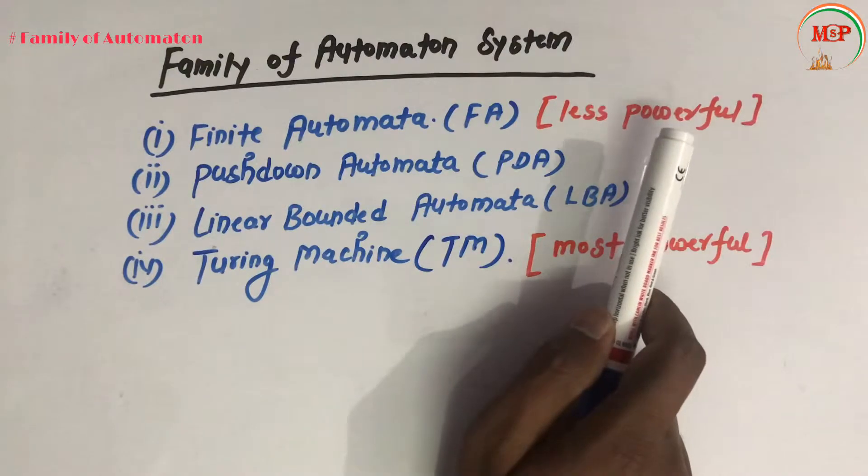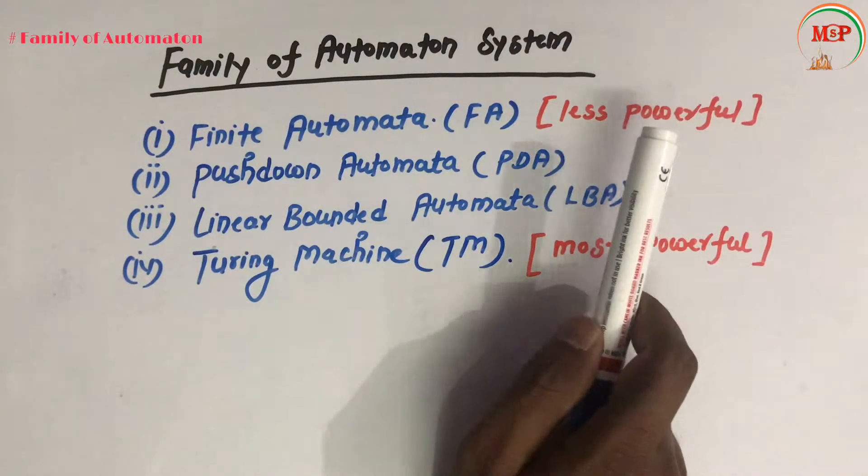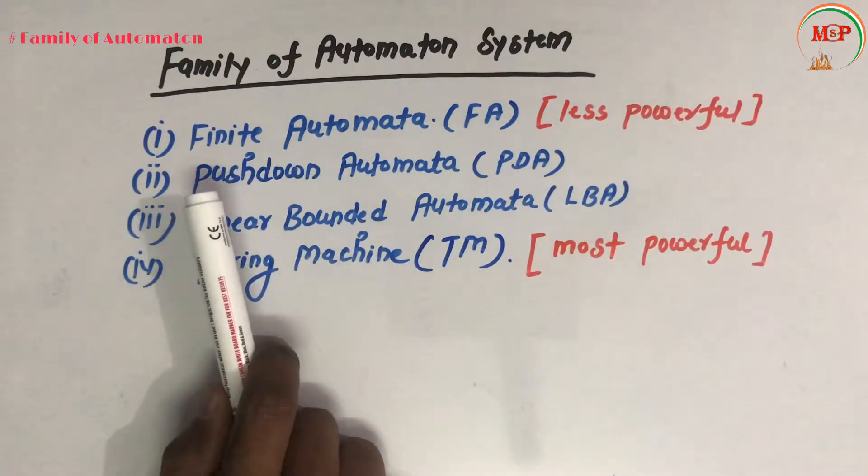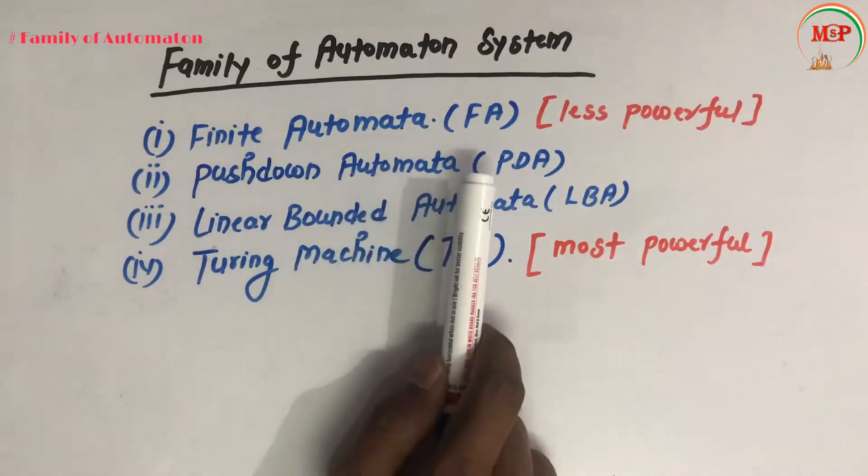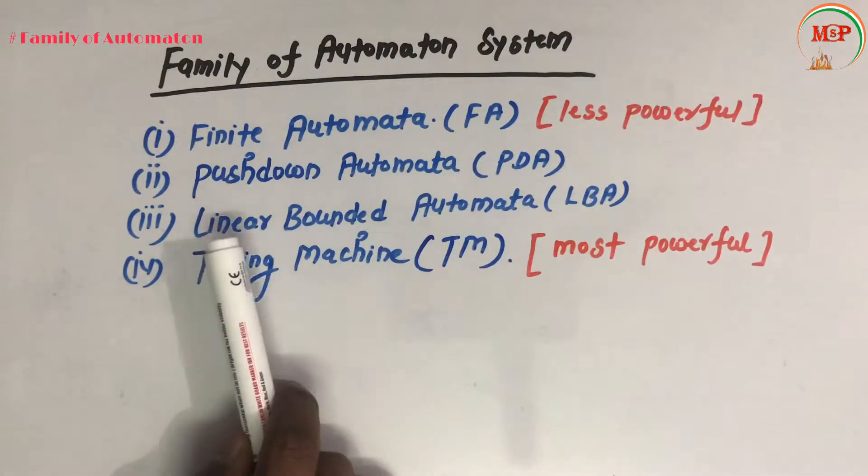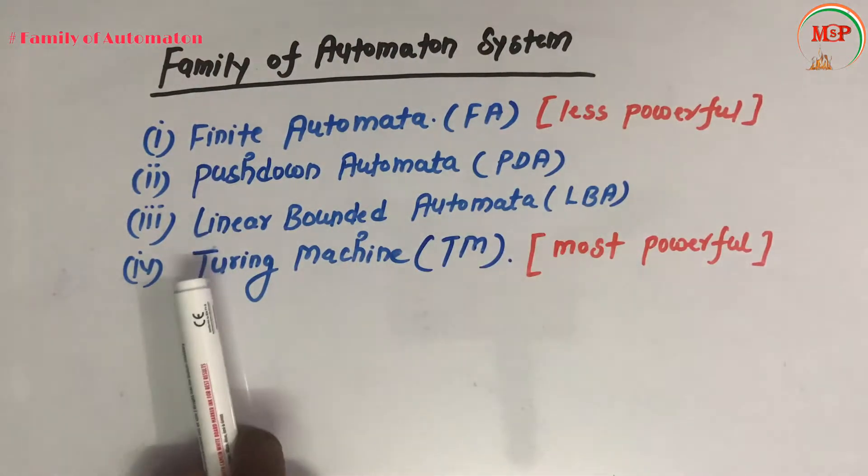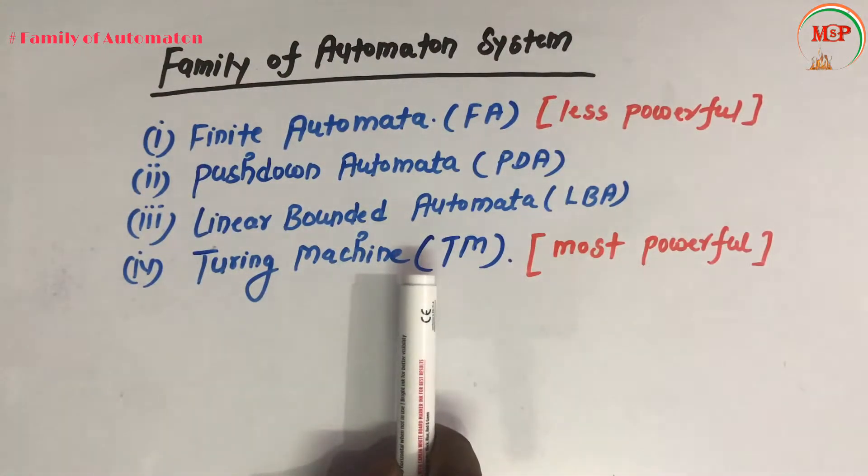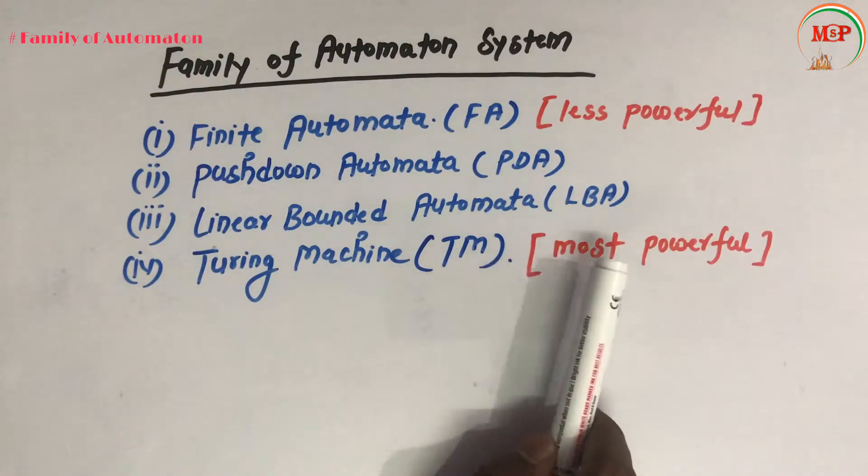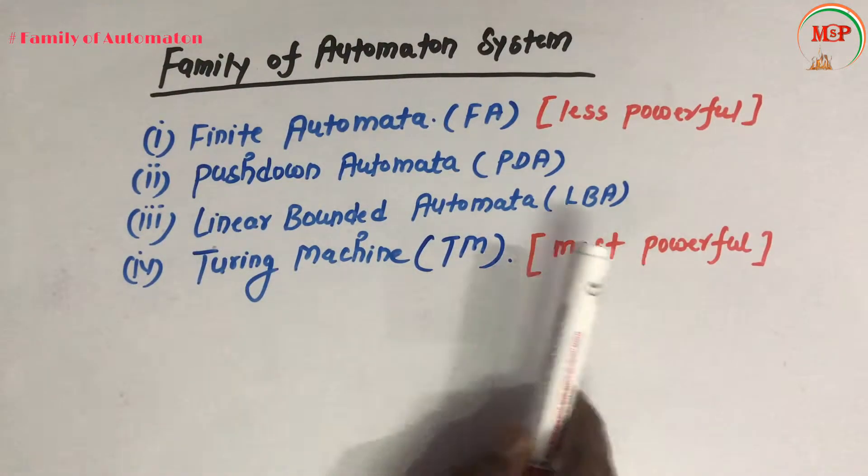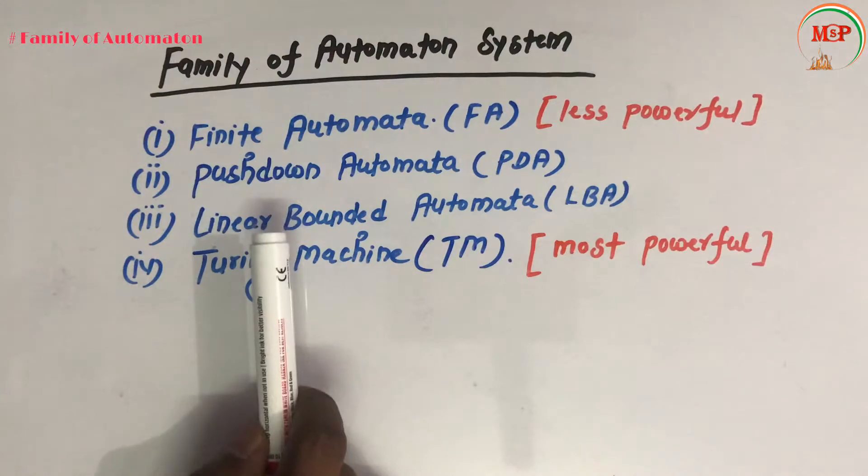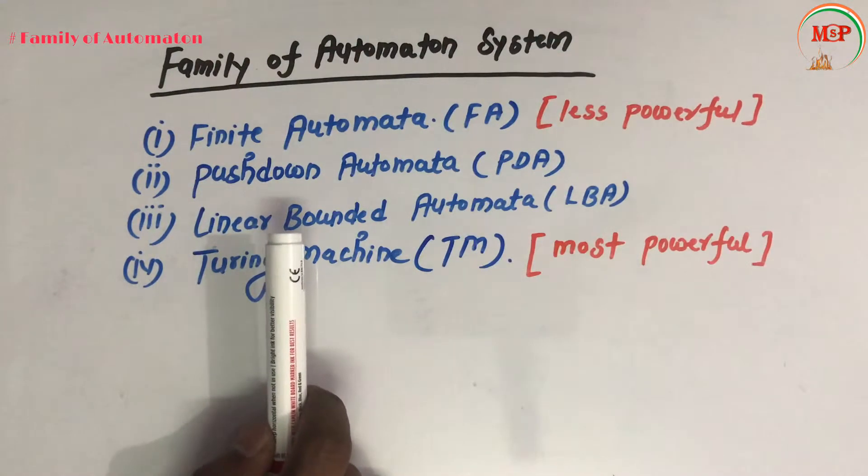The third is linear bounded automata (LBA). The fourth one is Turing machine (TM), and Turing machine is most powerful. These four topics later become chapters.